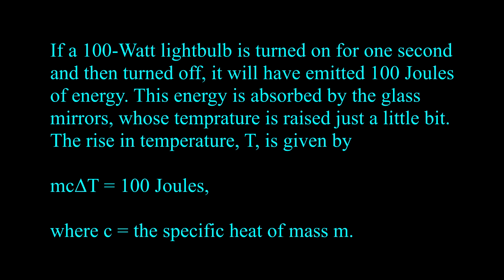If a 100-watt lightbulb is turned on for 1 second and then turned off, it will have emitted 100 joules of energy. This energy is absorbed by the glass mirrors, whose temperature is raised just a little bit. The rise in temperature T is given by MC·ΔT equals 100 joules, where C is the specific heat of mass M.